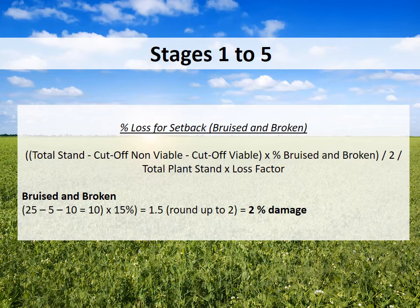To determine the percentage of loss for setback for bruised and broken, take your total stand, subtract the cut-off non-viable, subtract the cut-off viable, multiplied by the percentage of bruised and broken, divided by 2, divided by total plant stand, multiplied by the loss factor. So: 25 minus 5 minus 10 equals 10, multiplied by 15% (the percentage of bruised and broken), which works out to 1.5 — rounded up to 2, giving a total of 2% damage.